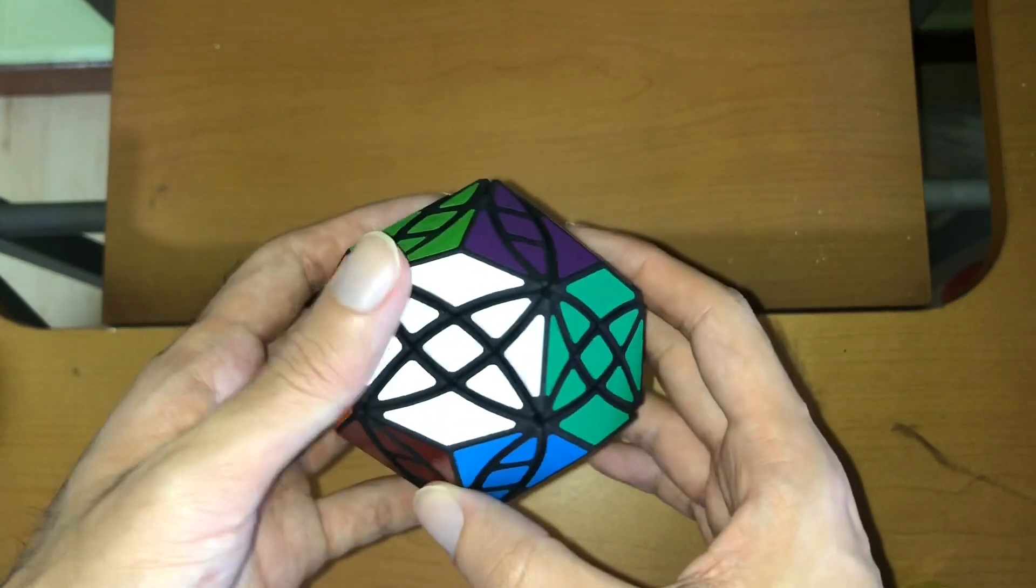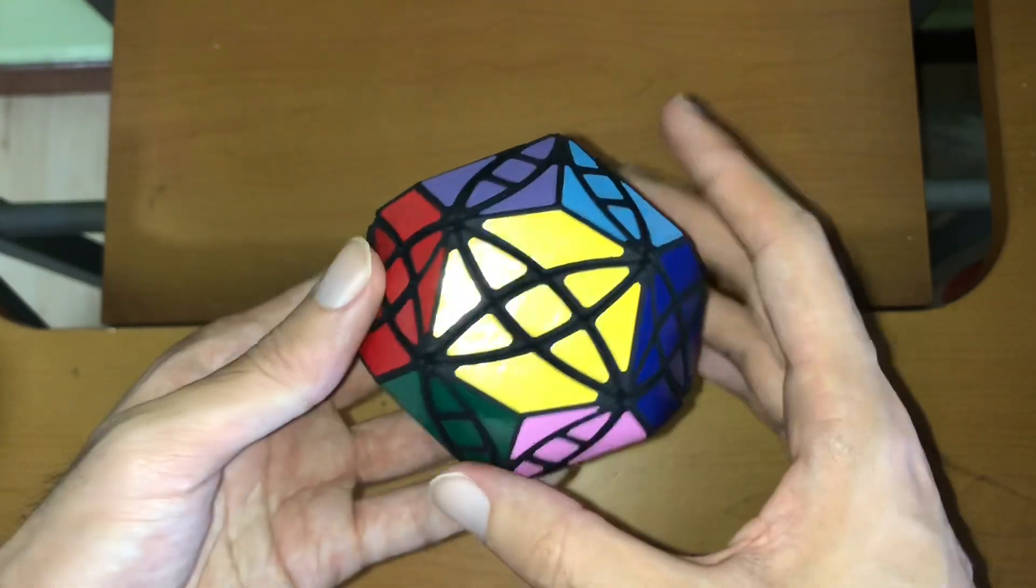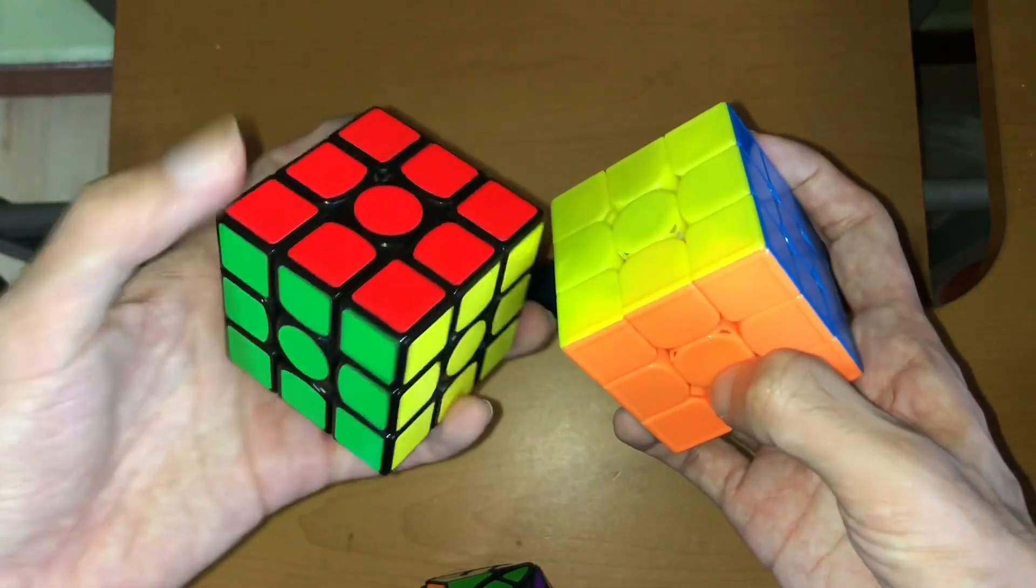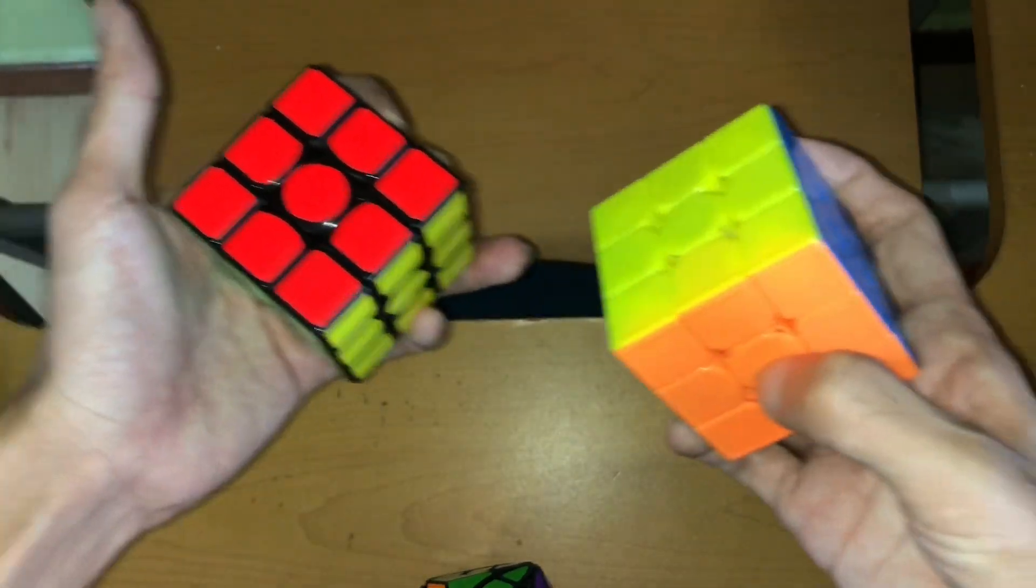This is the Shallow Diamond. Shallow Diamond is a shallower cut version of Dave's Diamond. This puzzle is a combination of two 3x3x3 cubes fused together at a 60 degree angle to each other, like this.